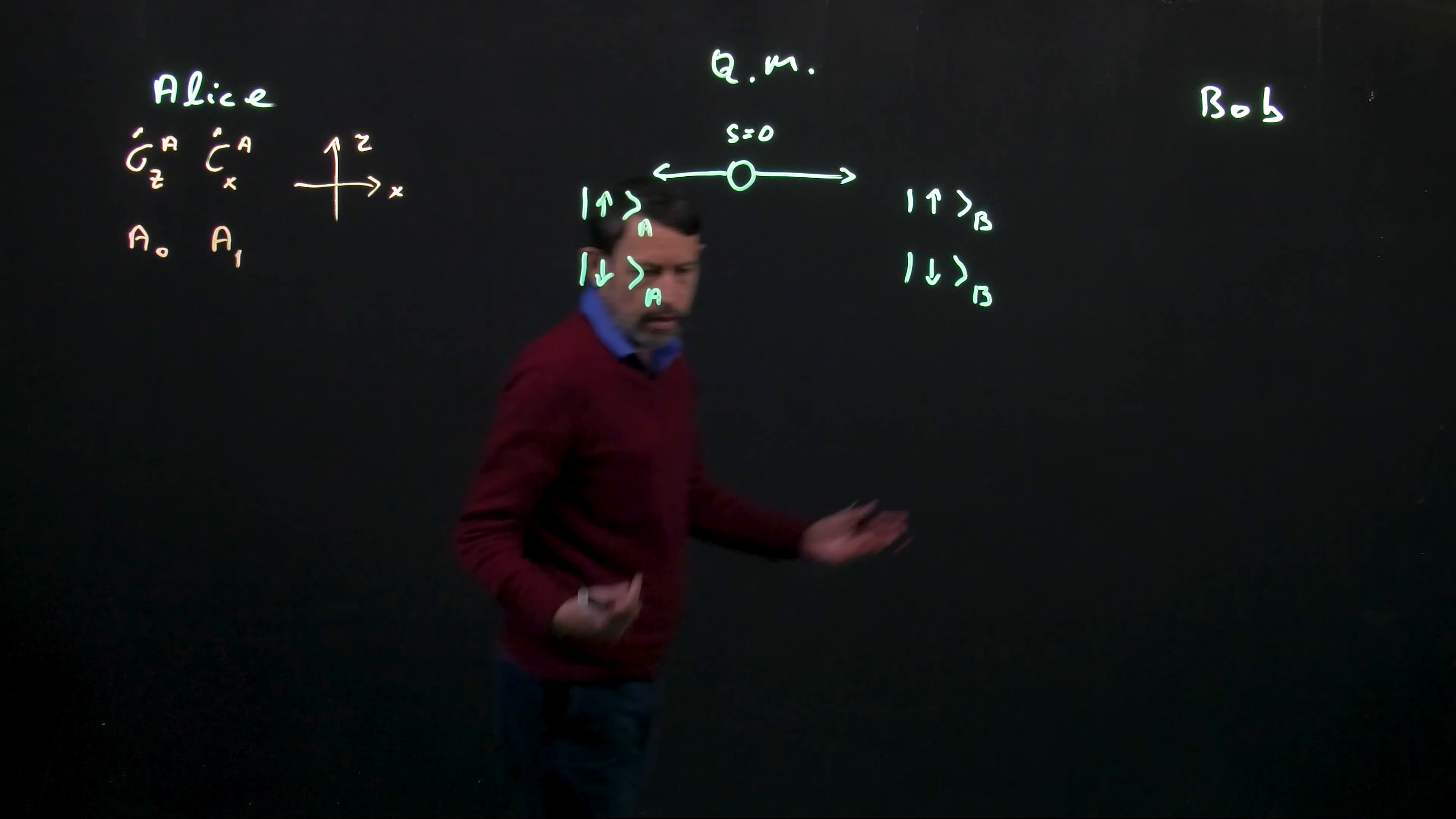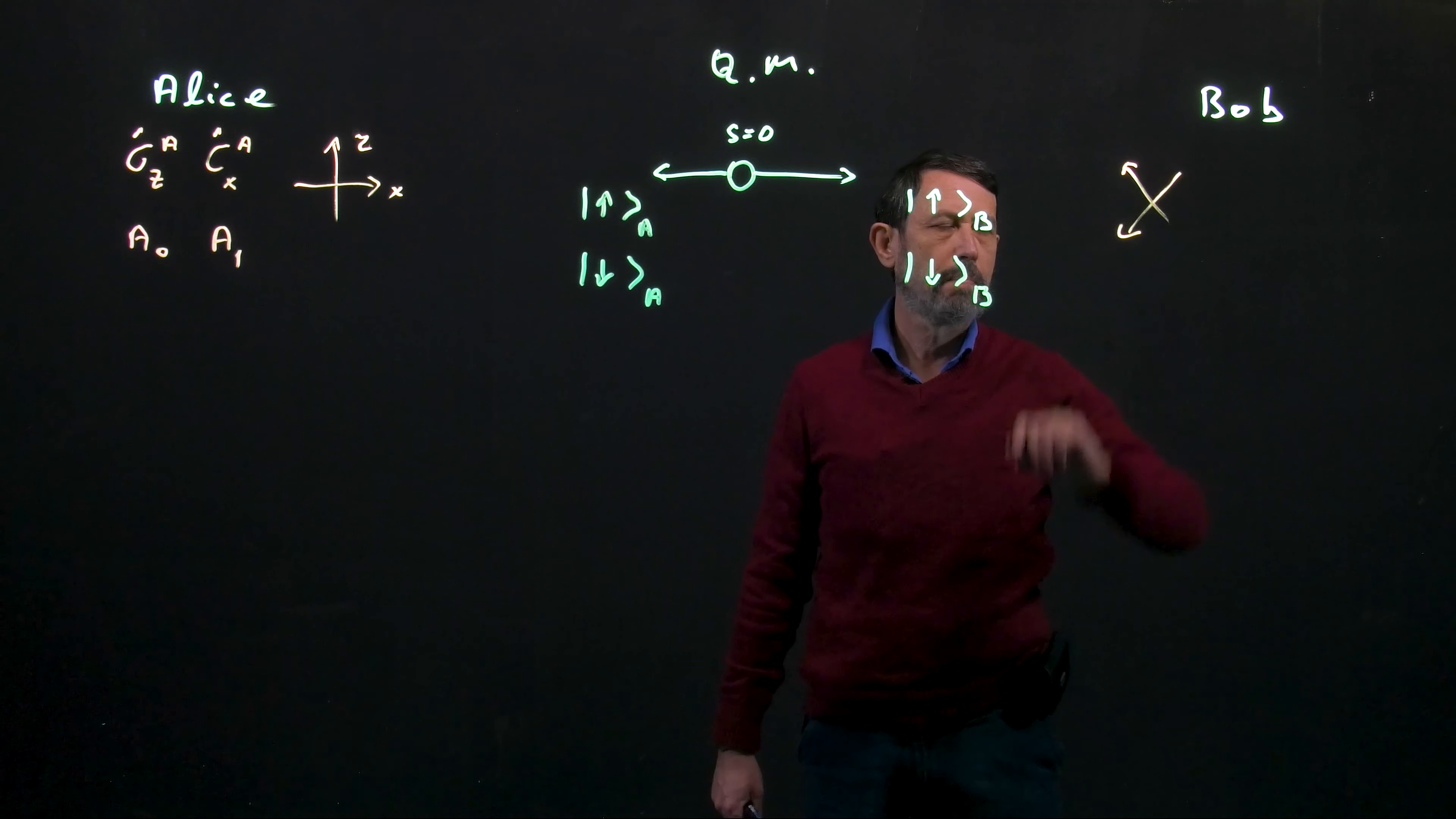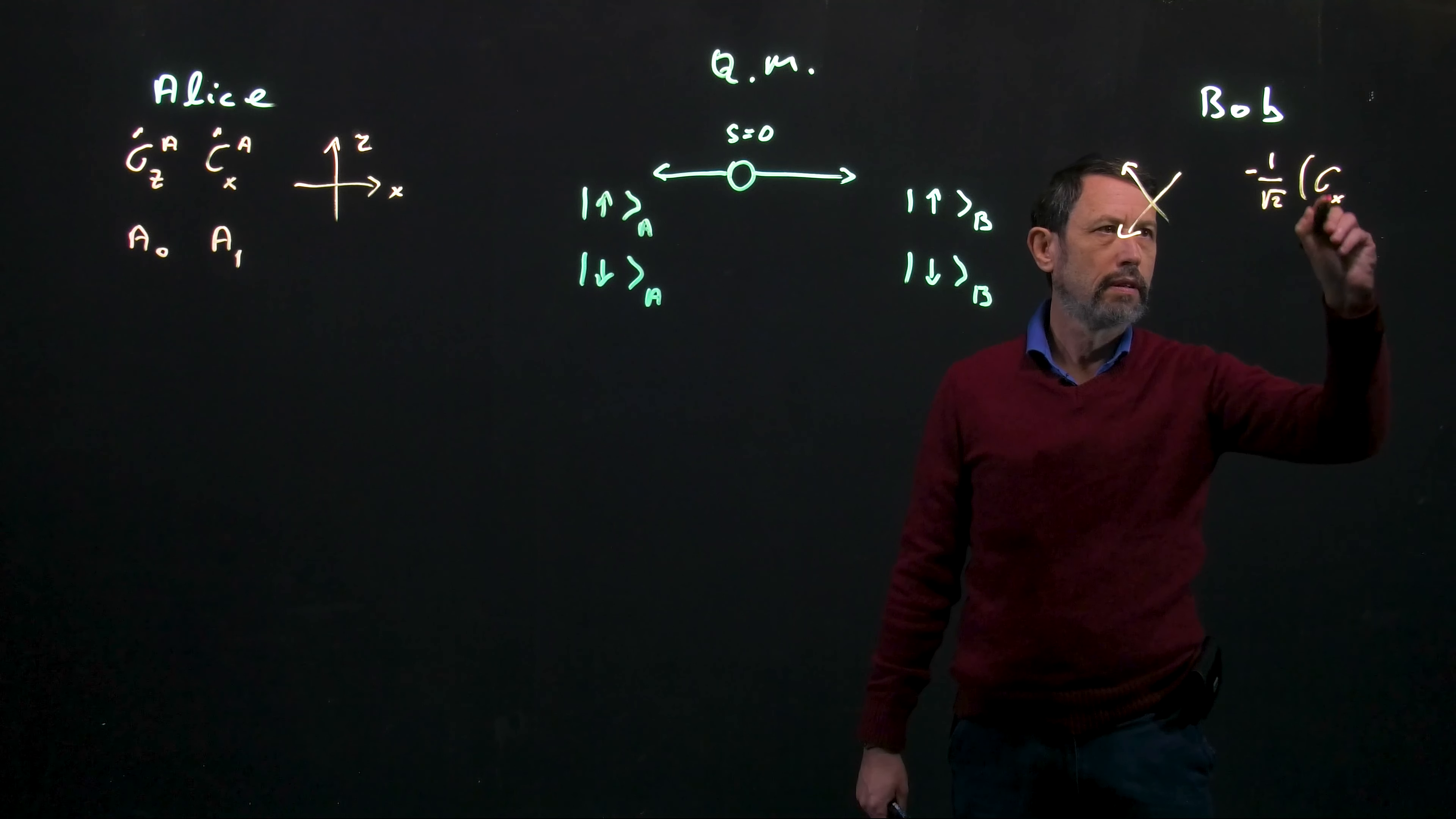Bob chooses two different measurement directions. Let's assume just something that is in 45 degrees to Alice's measurement and therefore is written as a combination of sigma x and sigma z.